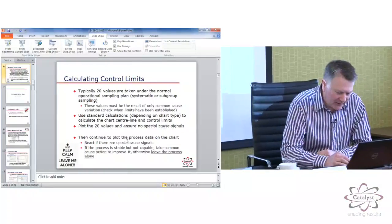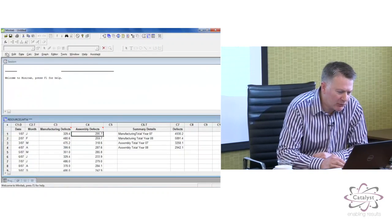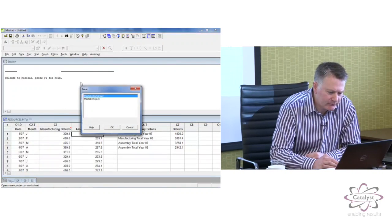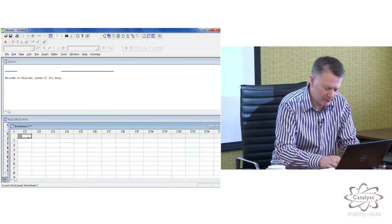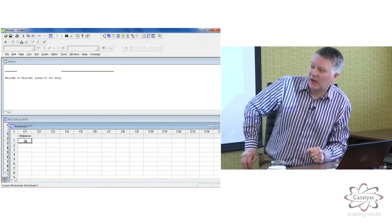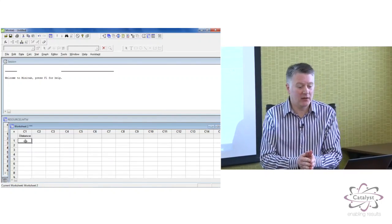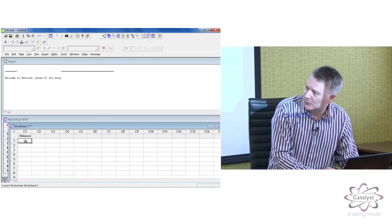So, this is data that we have sampled in a systematic fashion from our process. And we put it into Minitab. And I guess the first thing you could do is just to keep it very simple, is look at it in a time series plot.